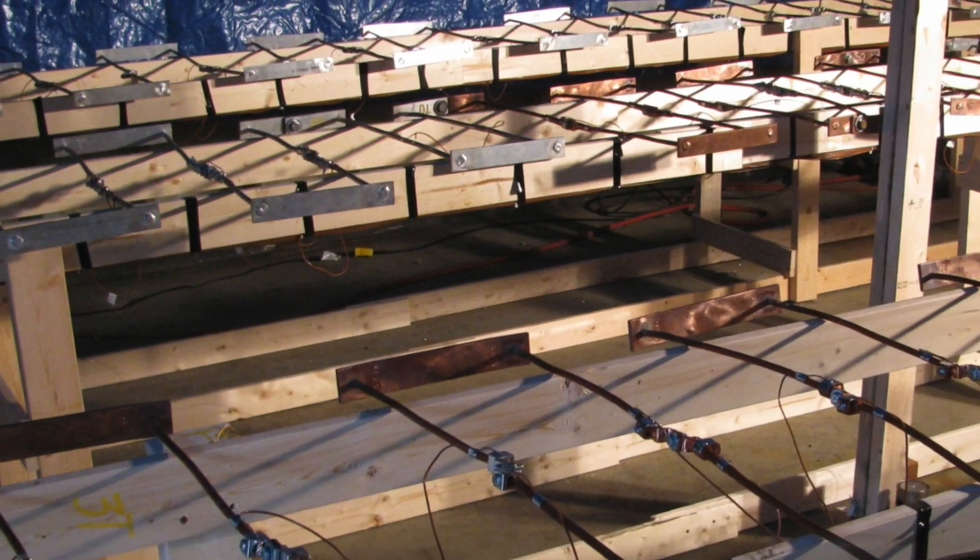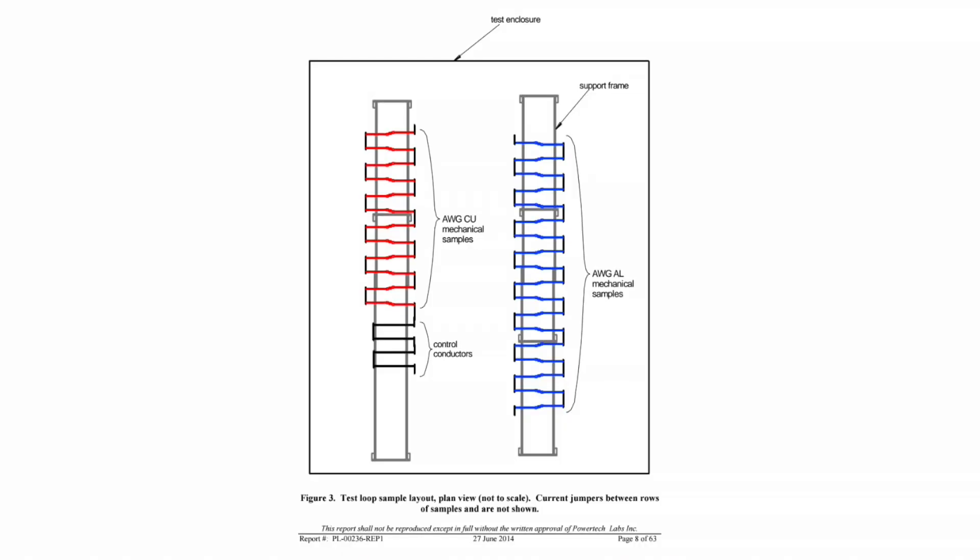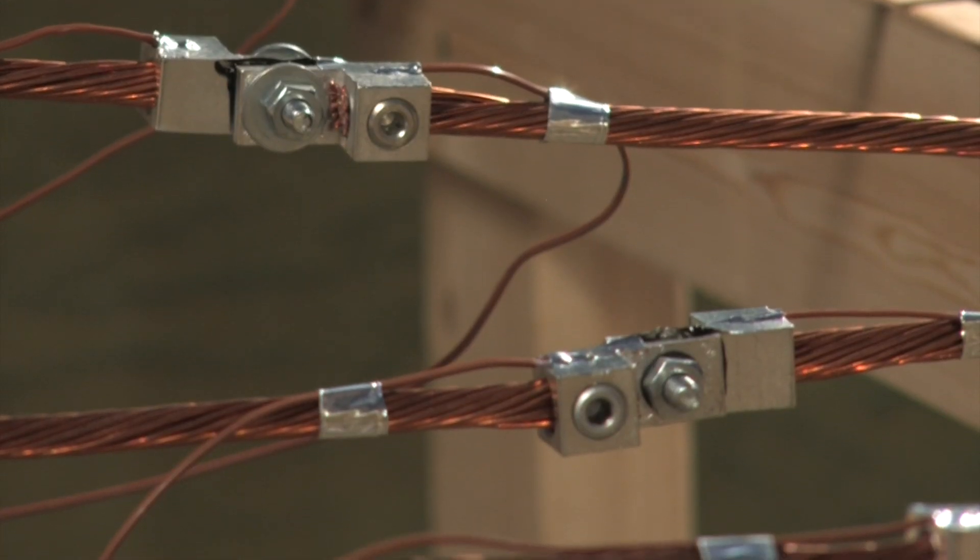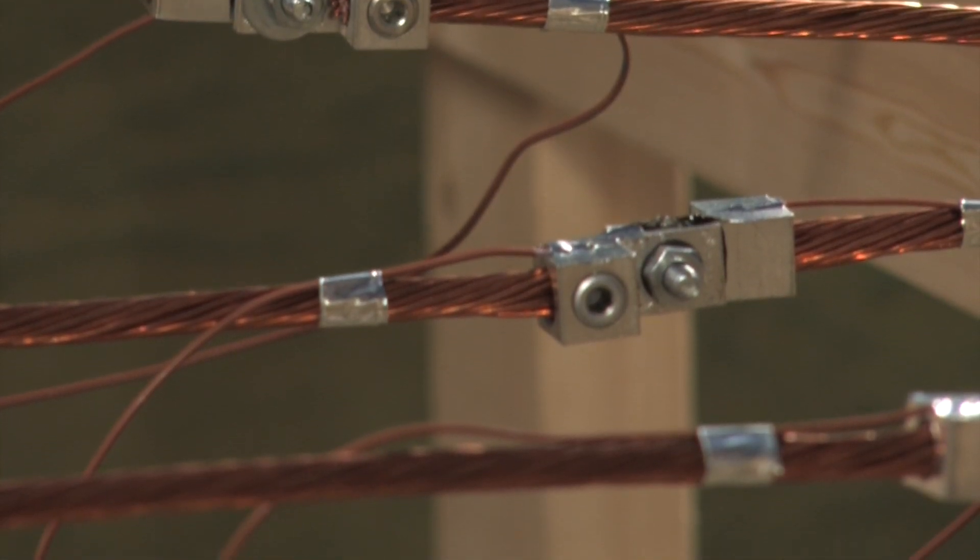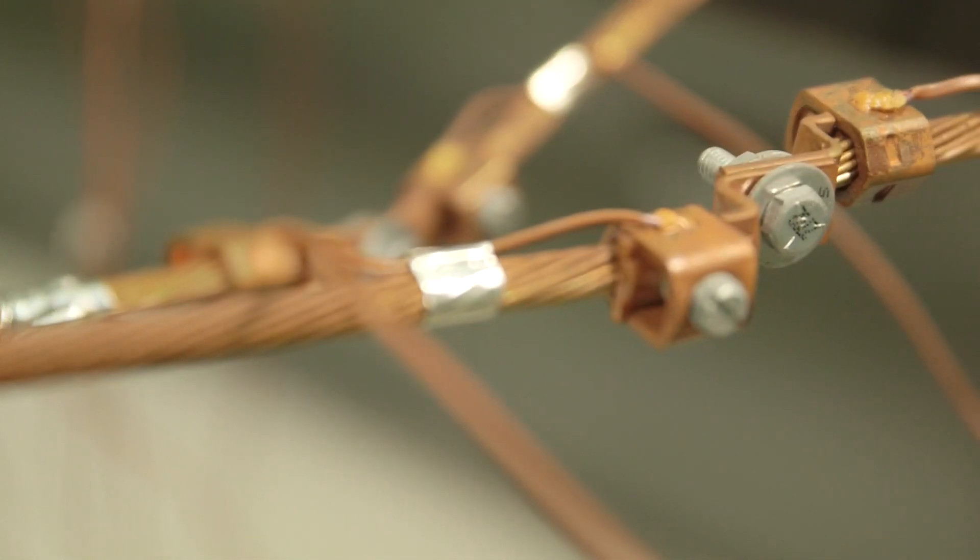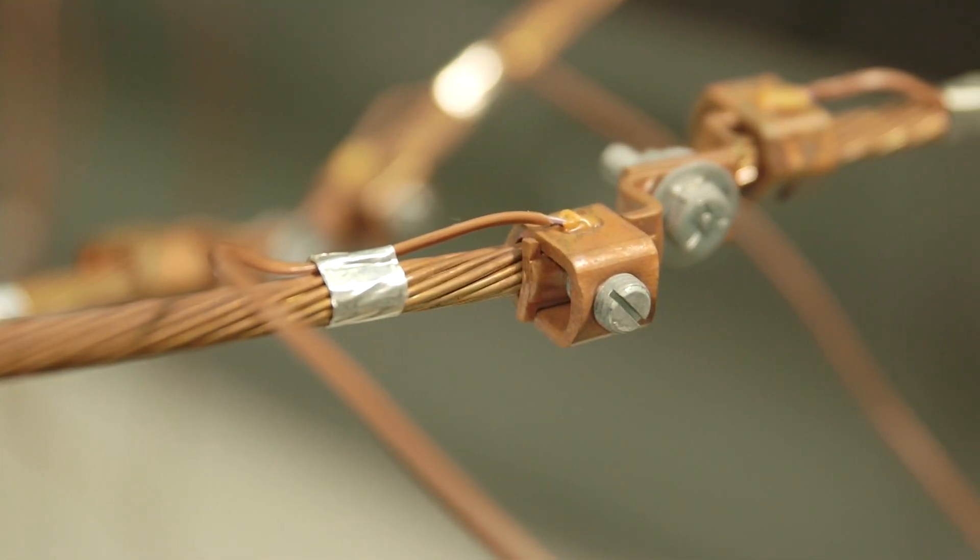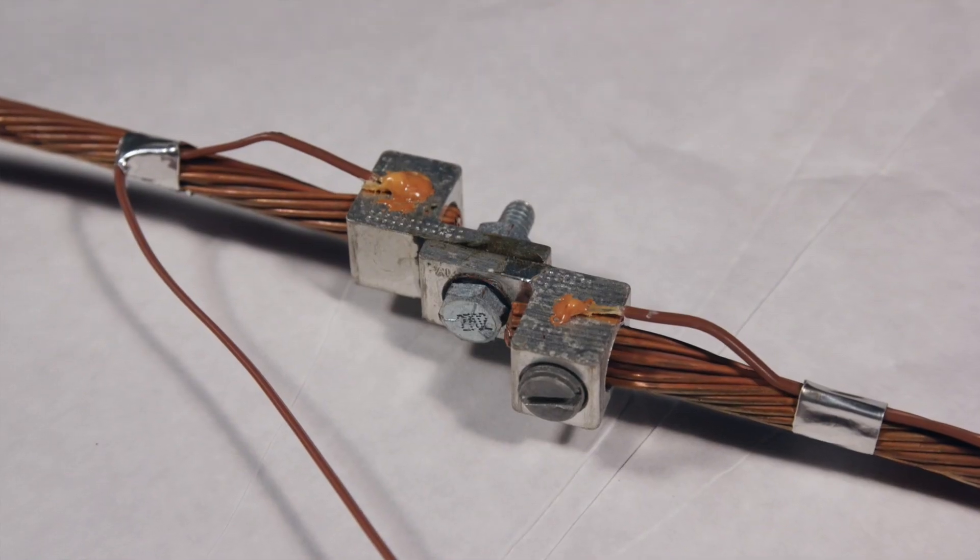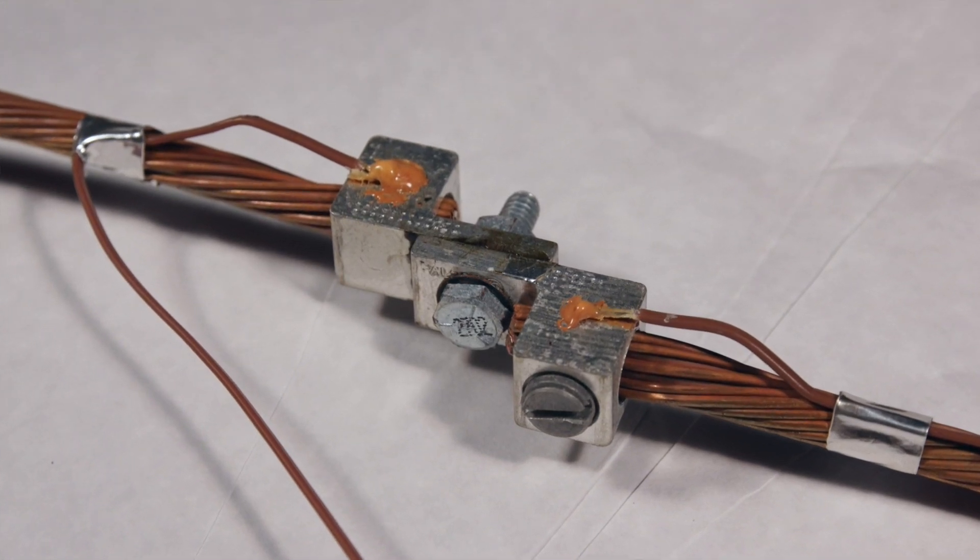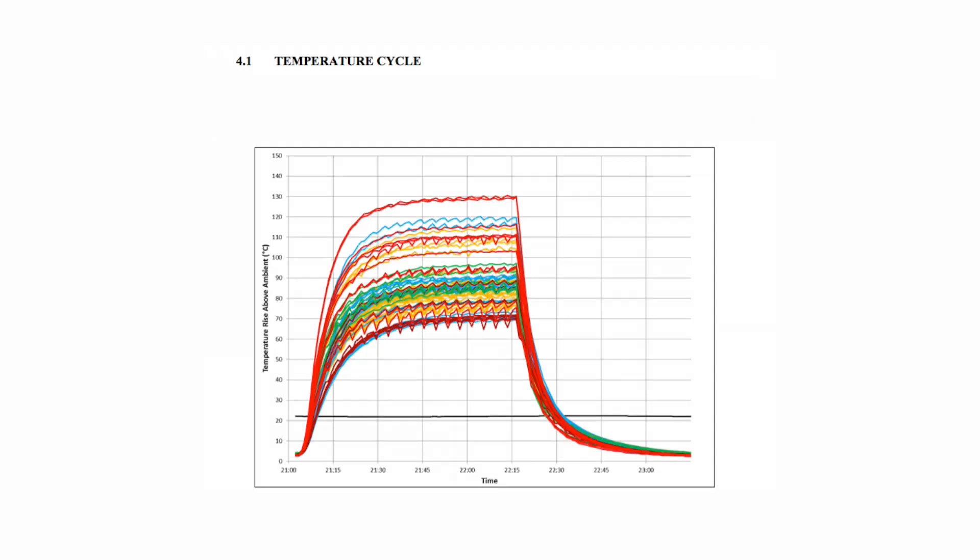The test samples were connected together in a series circuit as shown in the diagram so the same current level could be passed through all samples simultaneously. During testing, the current was automatically regulated at a fixed level and the temperature of each connection was measured using thermocouples. Each current cycle was two and a quarter hours long and consisted of heating the samples to temperature stability at a constant current level followed by a cooling period back to room temperature. A total of 1500 current cycles were performed for the test.